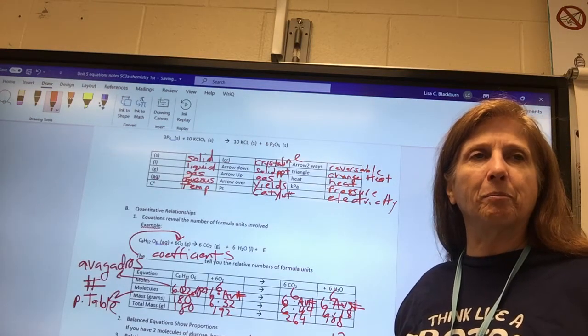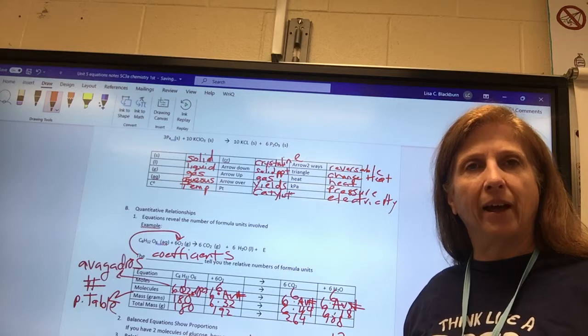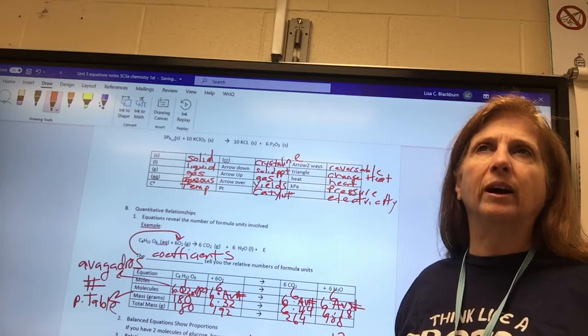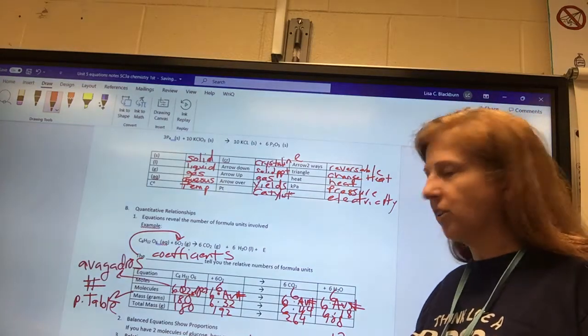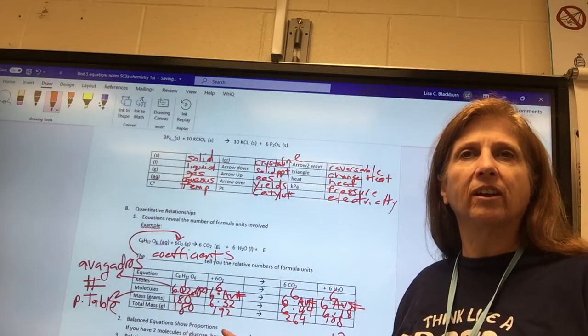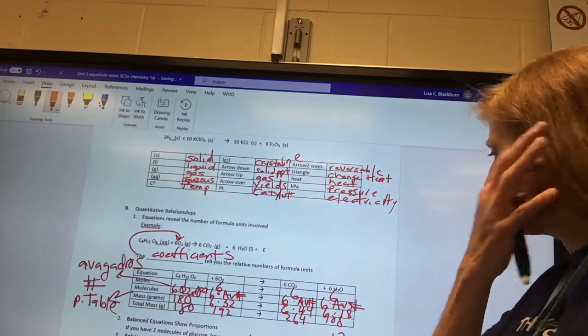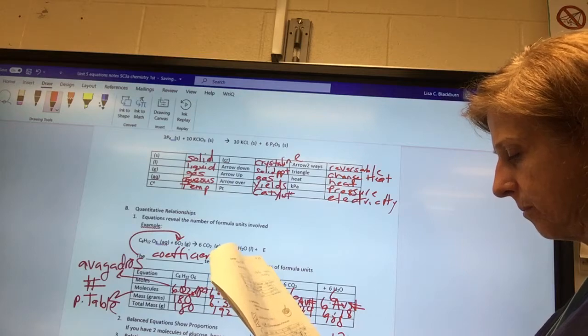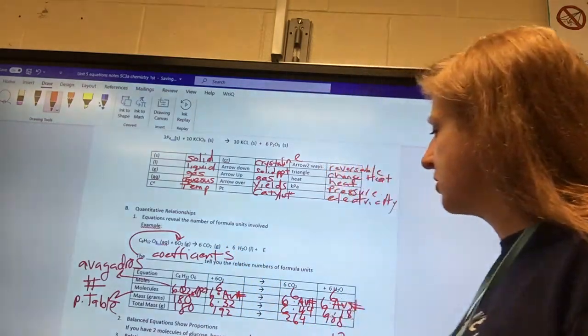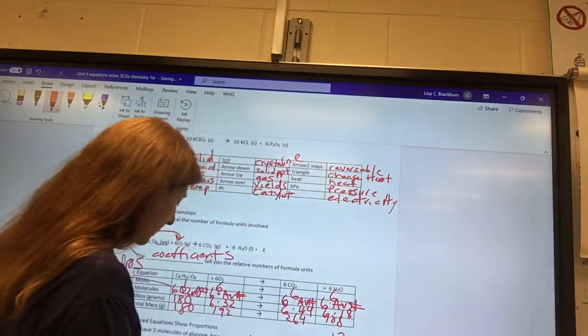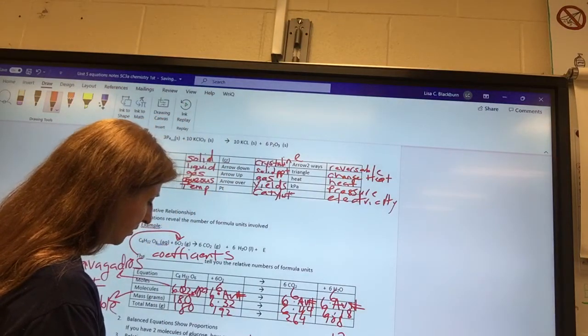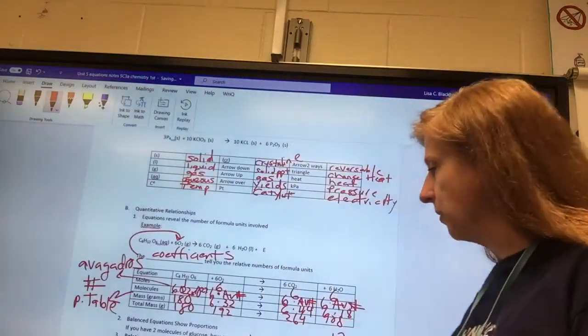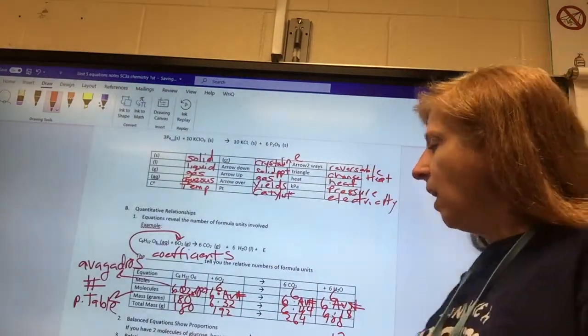Does everybody remember that from math class? You've learned ratios in math. When you do this, you want to express the ratios in the lowest whole numbers. So if it's a fraction, you have to reduce it. You put that in the lowest whole numbers.